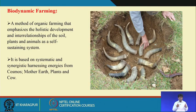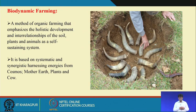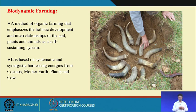Biodynamic farming is one type of organic farming. It is a method of farming that emphasizes the holistic development and interrelationship of the soil, plants and animals as a self-sustaining system. It is based on systematic and synergistic harnessing of energies from the cosmos, mother earth, plants and cows.